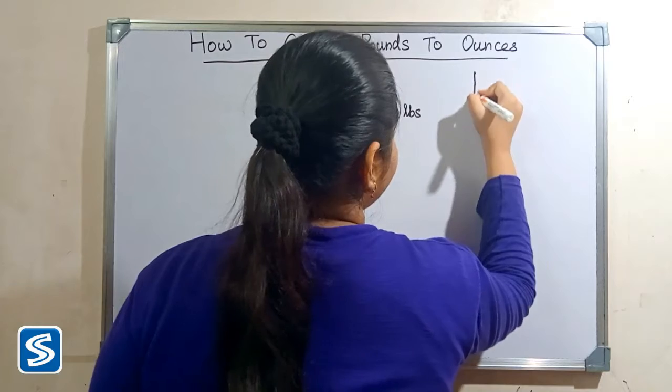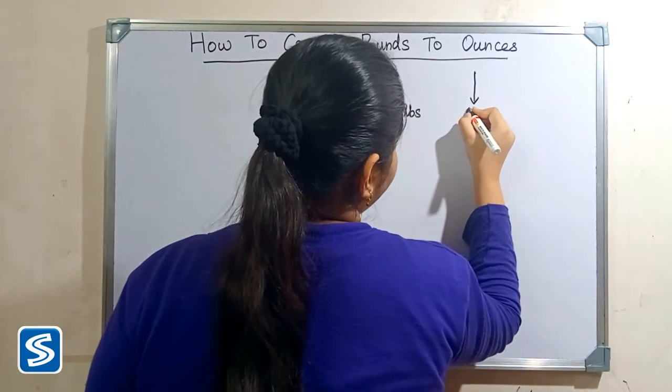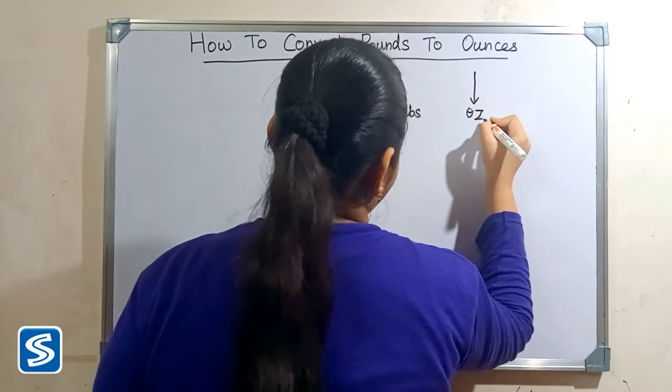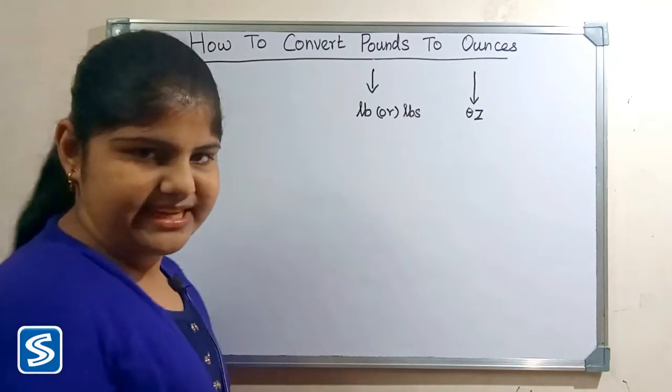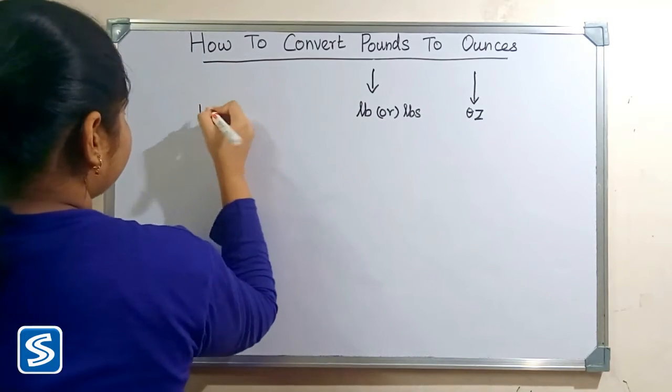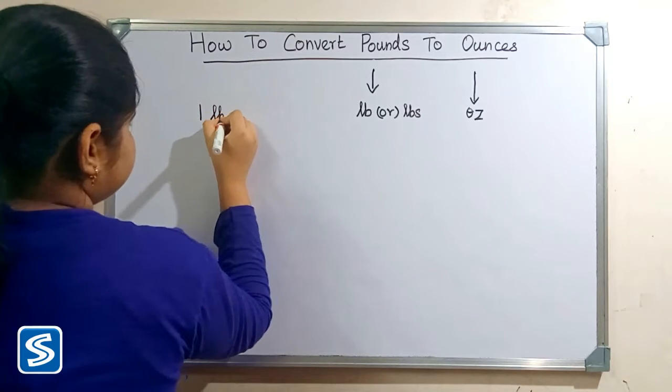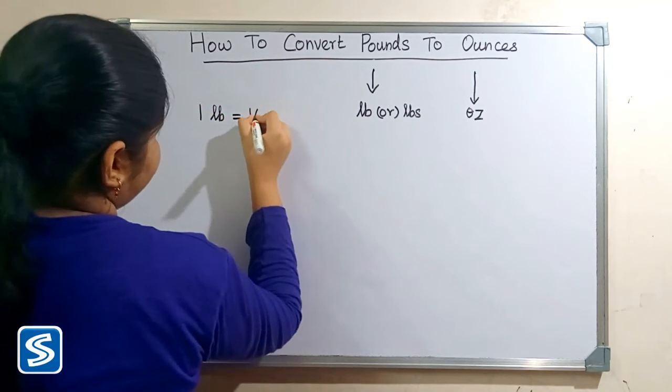The short form of ounce is oz. The formula for converting pounds into ounces is: one pound is equal to 16 ounces.